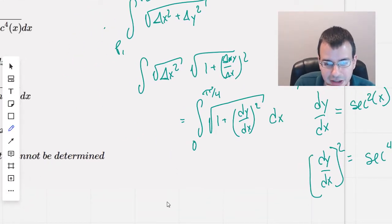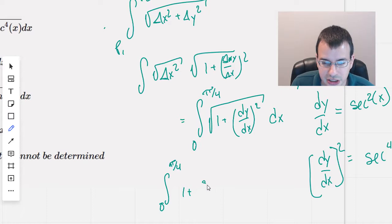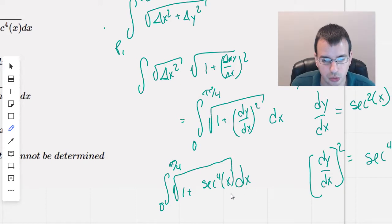And so our final answer, possibly, there might be some simplifications that happen here, we shall see will be 1 plus secant to the fourth of x square rooted dx.